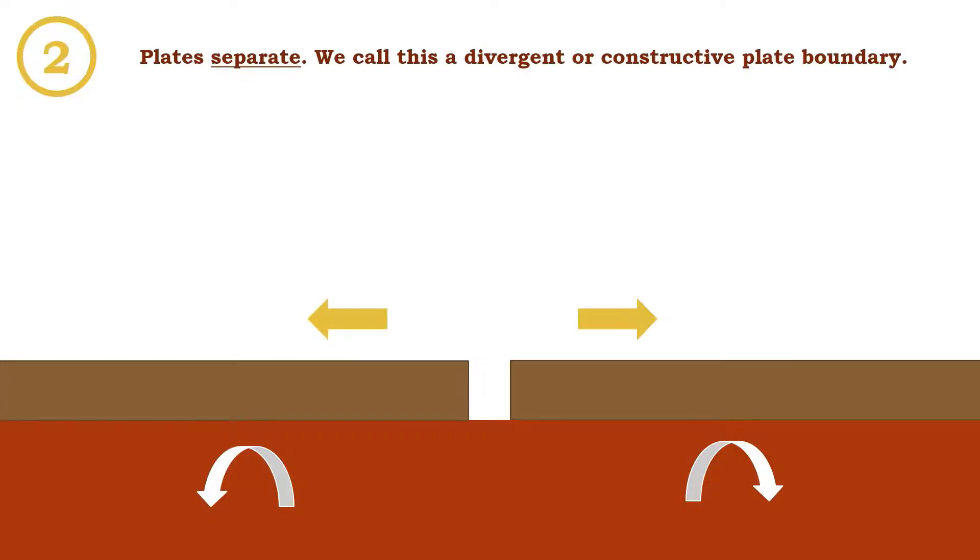Plates separate. We call this a divergent or constructive plate boundary. This is because it's going to create something.